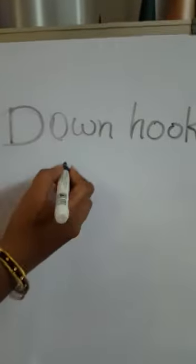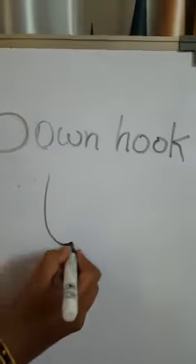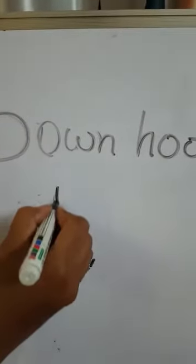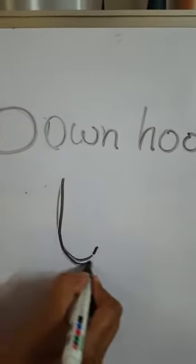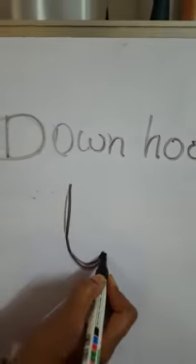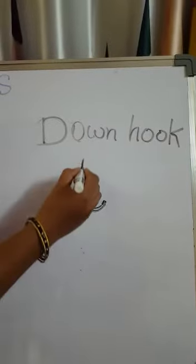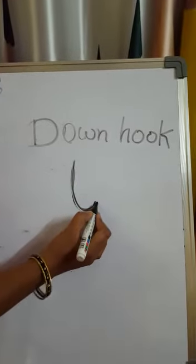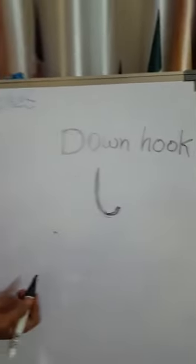Now down hook. The curve towards down side is called down hook.